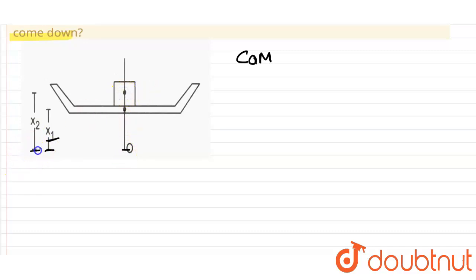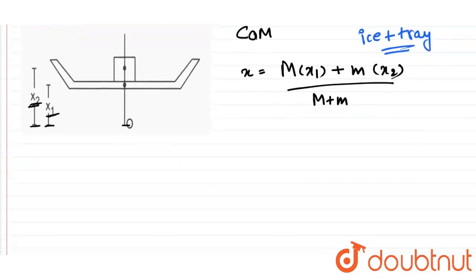So center of mass comes out to be capital M into x1 plus small m into x2 upon capital M plus small m. So this is going to be the center of mass of ice plus tray system. This is the center of mass for ice plus tray system.